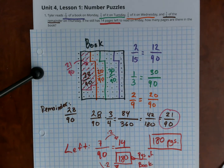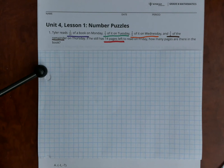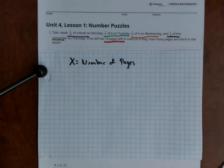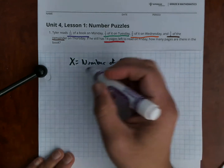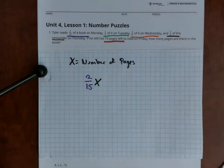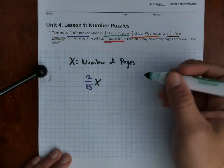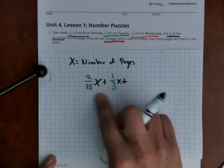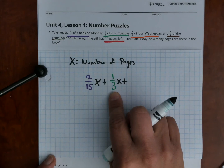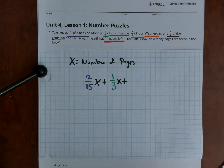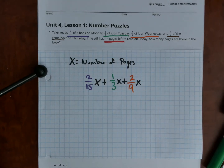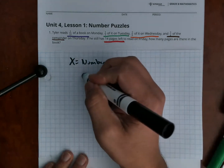Now I'm going to show you how to do it algebraically. We'll use x to represent the number of pages in the book and write an equation. First, we figure out how much he's read algebraically. He read two-fifths on Monday — that's (2/5)x. On Tuesday he read one-third of it, so I'm adding (1/3)x. On Wednesday he reads two-ninths of it.